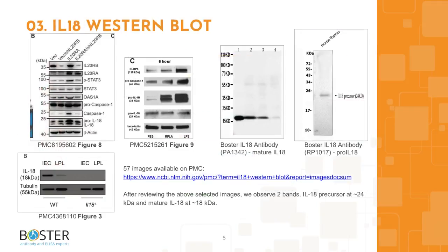Topic 3: IL-18 in western blotting. Antibody specificity can make or break an experiment. After looking through western blot images from publications and antibody companies, researchers can typically expect two bands in an interleukin-18 western blot: the inactive 24 kilodaltons precursor, and the mature biologically active IL-18 at approximately 18 kilodaltons.